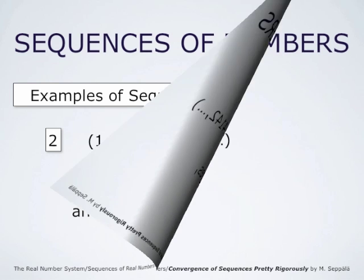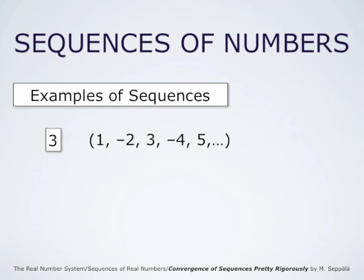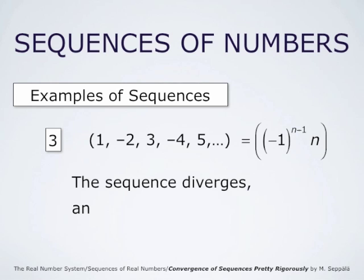The third example was the sequence 1, minus 2, 3, minus 4, 5, and so forth. This is an example of an alternating sequence — every second term is positive and every second term is negative. This sequence is defined by the function negative 1 to the power n minus 1 times n. This sequence diverges and it has no limit.